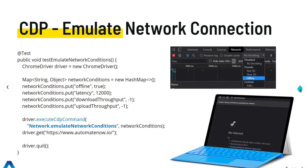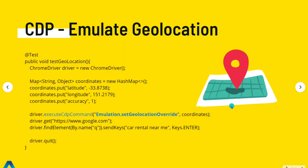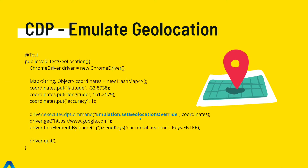Here we're emulating geolocation. We have a HashMap containing latitude, longitude, and accuracy parameters. Then we call driver.executeCdpCommand with Emulation.setGeolocationOverride and pass in those parameters. When this test runs, it navigates to google.com and searches for car rental near me. The results are based on the geolocation we passed in. This example uses Sydney, Australia, so we'll see car rental companies in Sydney. If you'd like to learn more about the different CDP commands, please refer to the link in the video description.